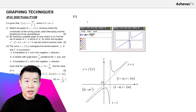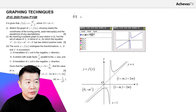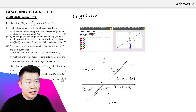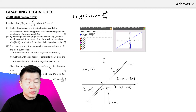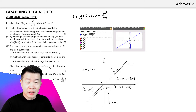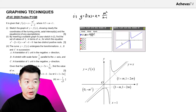Part 1 of this JPJC 2020 question requires us to sketch the graph of y = f(x) = (x + m²)/(x − 1), where m is between 0.5 and 1. For example, letting m = 0.75, we can press it into the calculator to see the rough shape of the graph.